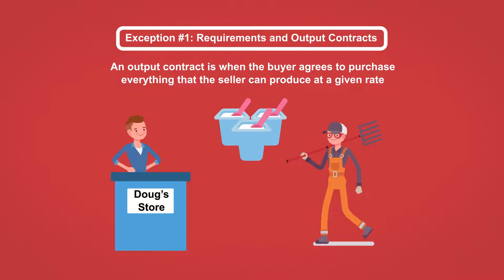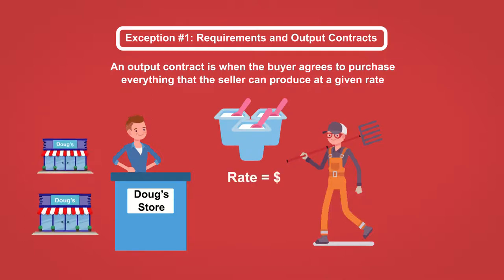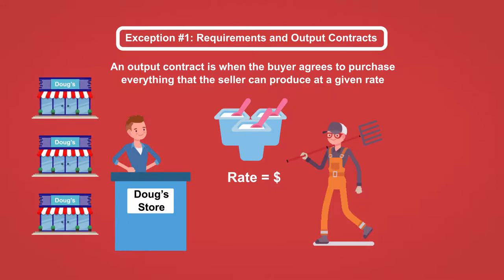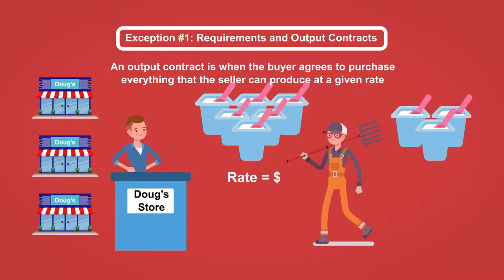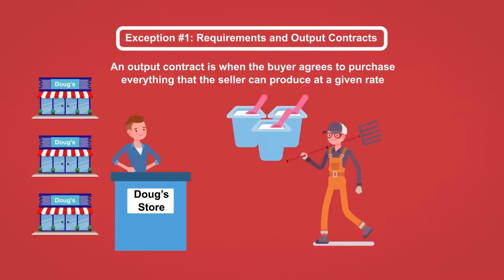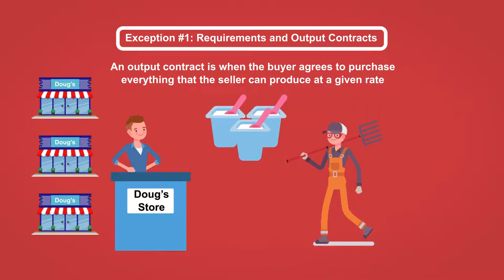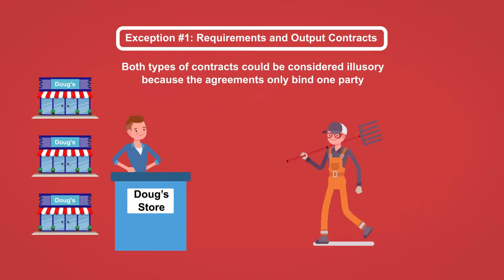An output contract is a comparable circumstance but is the other side of the coin. Here, the buyer agrees to purchase everything that the seller can produce at a given rate. If instead of owning a small grocery store Doug owned a chain of major grocery stores, and his need for Ben's yogurt was greater than what Ben could produce, he might agree to purchase all the yogurt that Ben could produce at a given rate. This is an output contract because Doug is agreeing to purchase Ben's entire output.